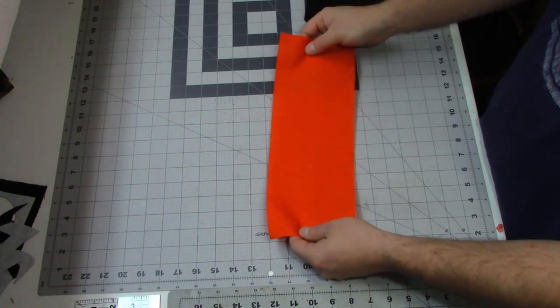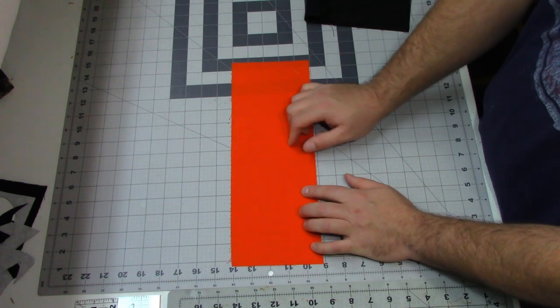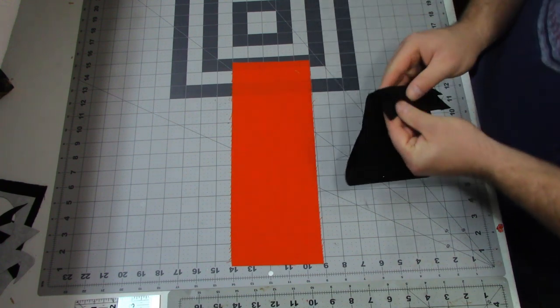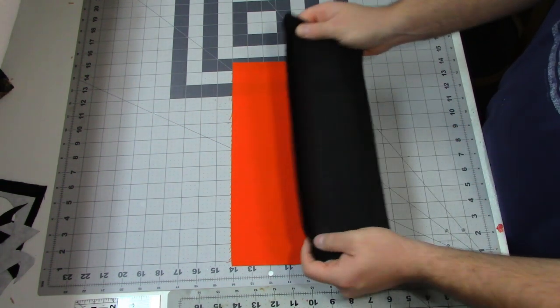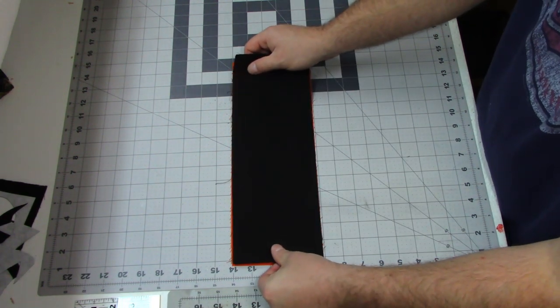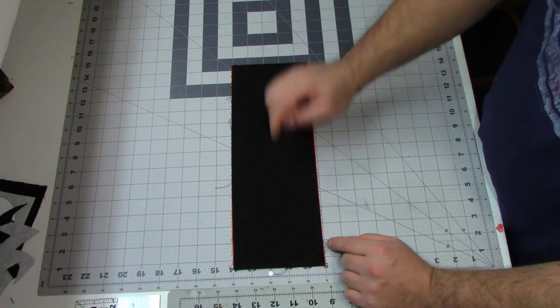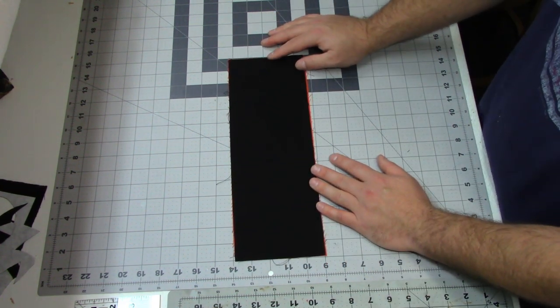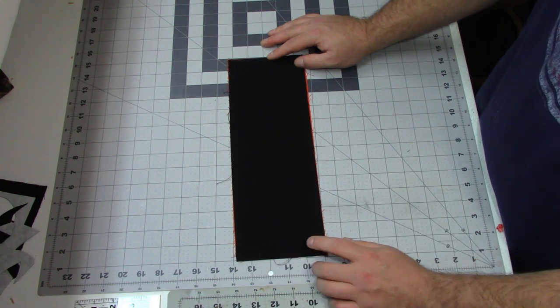So now you just want to grab your outside piece for your bag and I'm going to lay it so that the right side is facing up if it has one. I'm going to take my lining piece and I'm going to lay it on top with the right side facing down. And now I'm just going to take this over to my sewing machine and on both of the short sides, I'm going to stitch with a quarter inch seam allowance, backstitching at the beginning and the end.